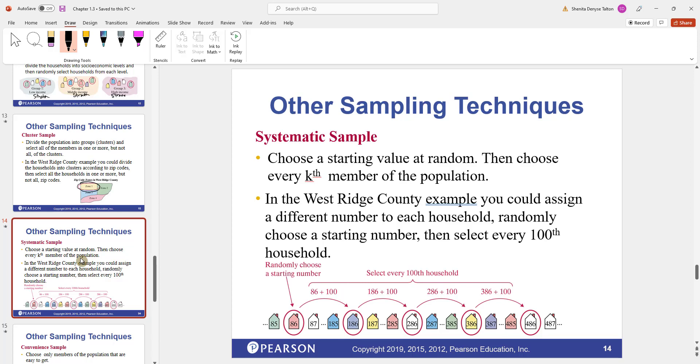Another type of sampling is systematic sampling. And this is where you choose a starting value at random and then choose every kth member of the population. Going back to our example, you could assign a different number to each household and then randomly choose a starting number. Then select every 100th household. So that's why systematic deals with the kth number. In this case, we're dealing with the 100th household. So let's say our starting point is the number 86. I want to choose every 100th household after 86. So we add 100 to 86 and we'll choose the household that's assigned the number 186. We add 100 to this, we get 286. Then we choose the household assigned to the number 286 and so on until we get the amount that we need for our sample.